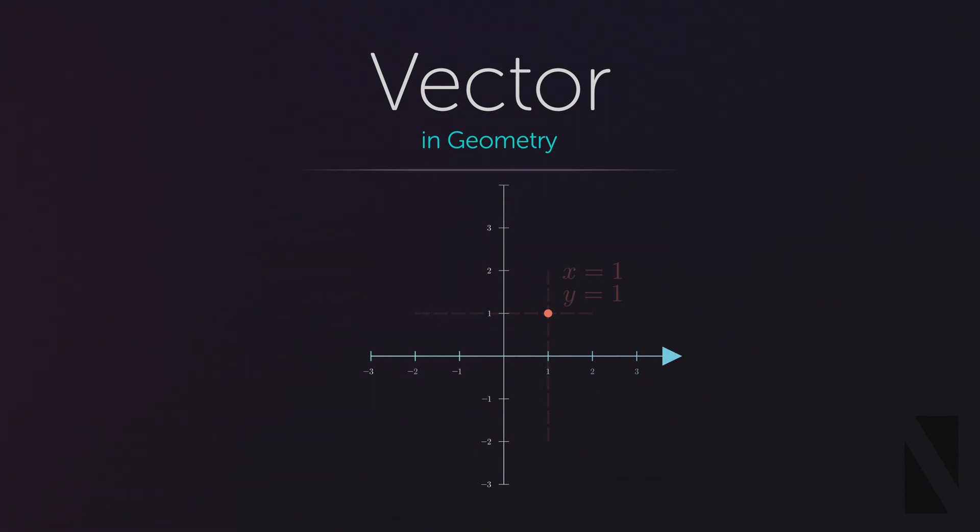Now we want to move this point to another location such as minus 2 and 2. We can represent this movement using a vector in this geometric space. This vector starts from 1 and 1 and ends at minus 2 and 2.